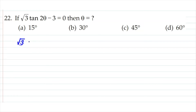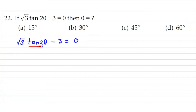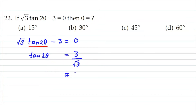Next question — same type of practice. We have √3 tan 2θ minus 3 equals 0. When we have a trigonometric ratio in an equation like this, we separate it. Rearranging: tan 2θ equals 3 divided by √3.